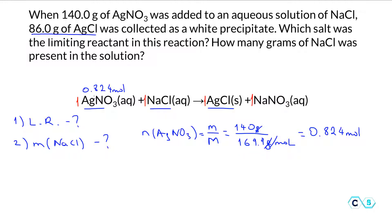Based on the mole ratio, everything is one to one, which means that amount of silver nitrate would produce the same number of moles of product. So the moles of silver chloride would be 0.824 moles.